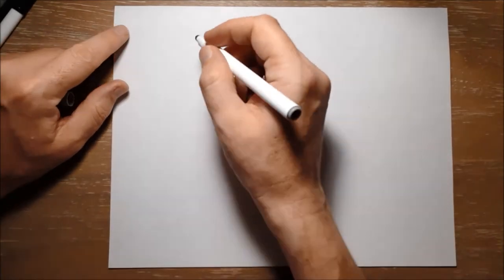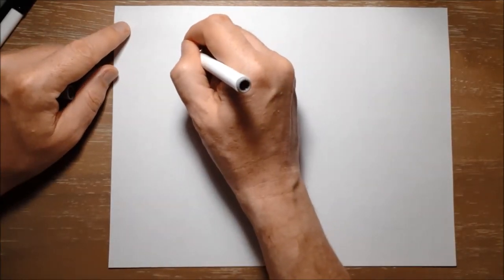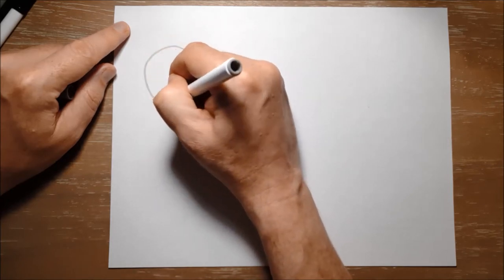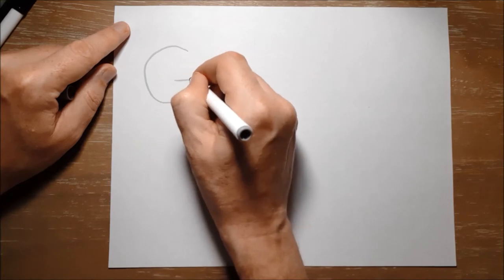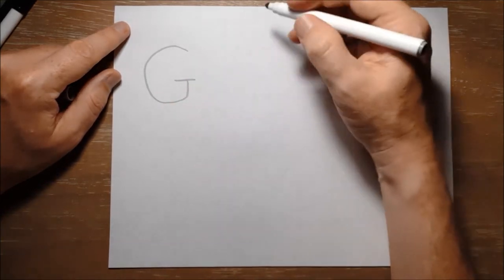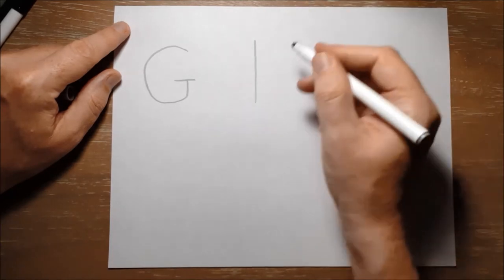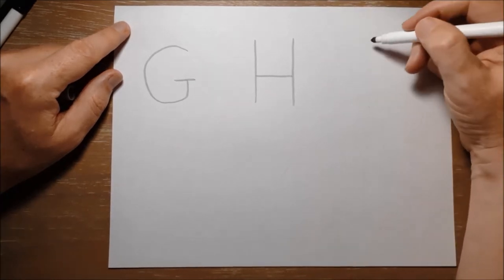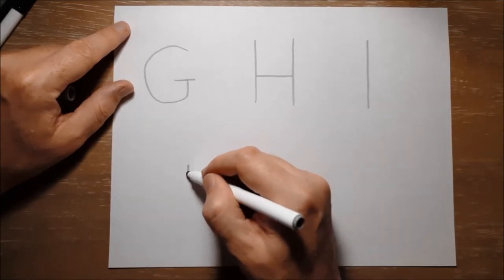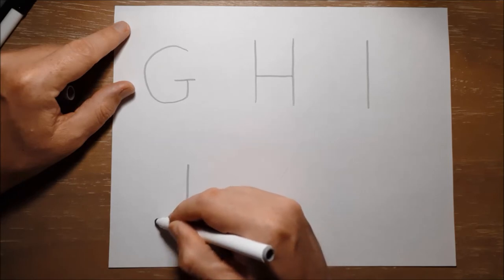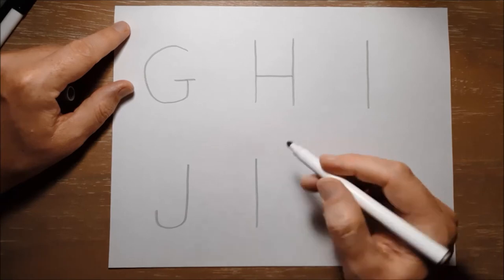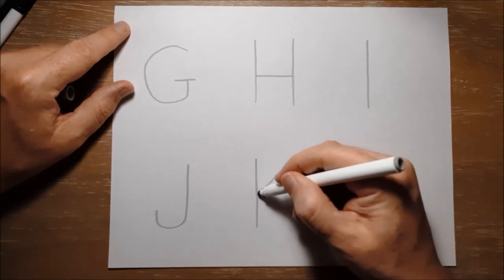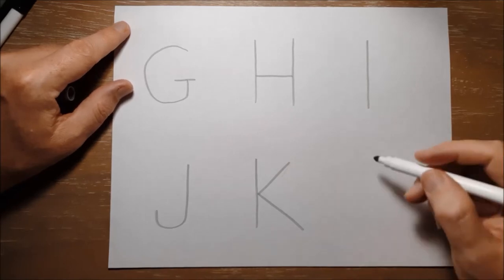The first thing I'm going to do is just draw the regular uppercase letters. So I'm going to make a regular uppercase G, just like this, and then a regular uppercase H, and a regular uppercase I, and a regular uppercase J and a regular uppercase K, and a regular uppercase L.